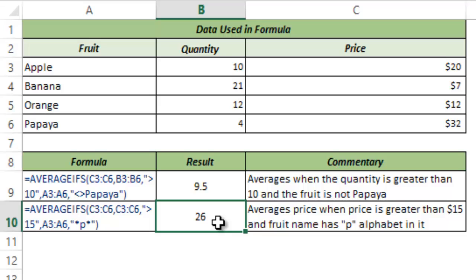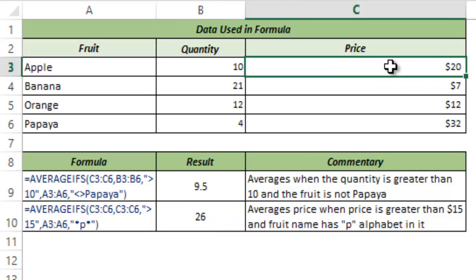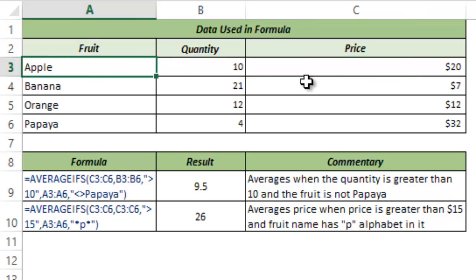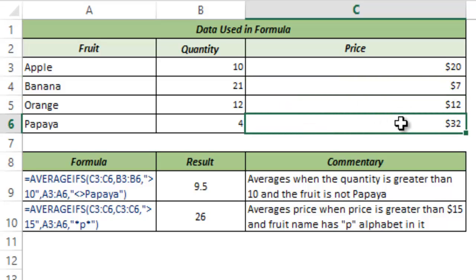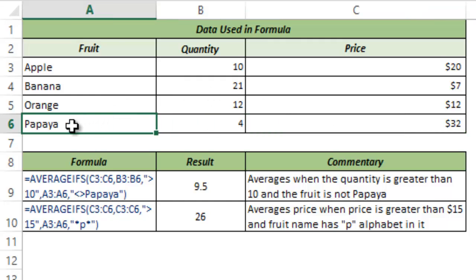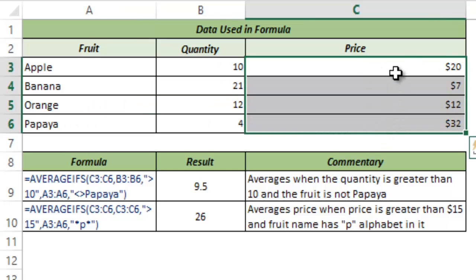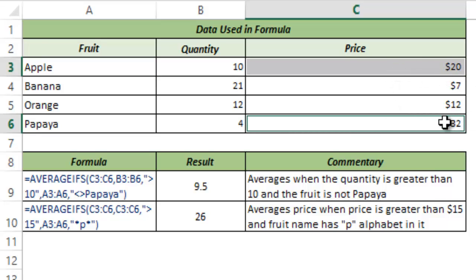When I close and hit Ctrl+Enter, this gives me 26. Let's see how it worked. The first price point is 20: price is greater than 15 (true) and the fruit Apple contains P (true), so it's included. The second price point is not greater than 15, so it's excluded. The third is also excluded. The fourth price point is 32, which is greater than 15, and the fruit Papaya contains P, so both conditions are met and it's included. Only C3 and C6 are considered: 20 plus 32 equals 52, divided by 2 gives 26.